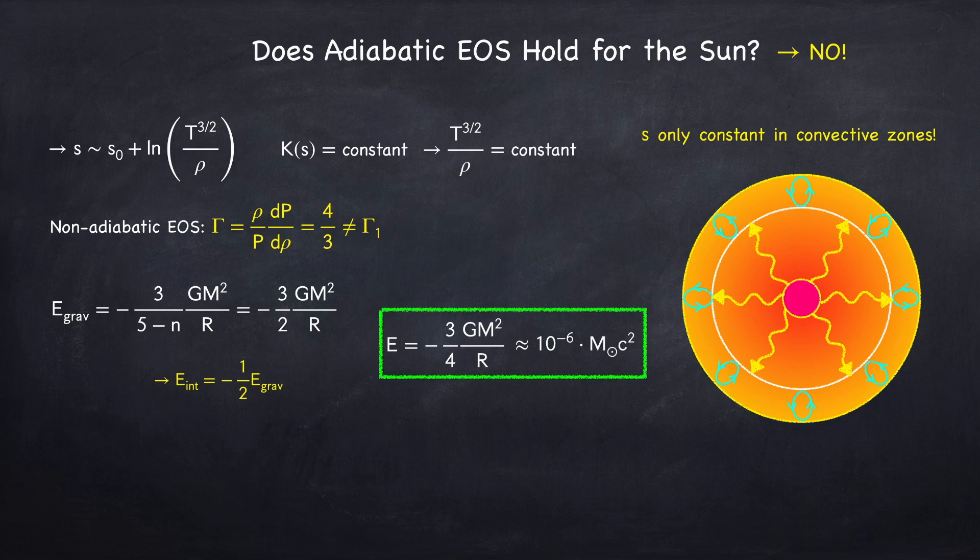When we assume the adiabatic equation of state, it was 3 sevenths instead of 3 fourths. So the difference isn't that significant. In fact, even if you assumed constant density, which corresponds to n equals zero, in that case, the energy would be 3 tenths. So between 3 fourths, 3 sevenths, 3 tenths, you're within about a factor of two either way. So it really doesn't make that big of a difference.